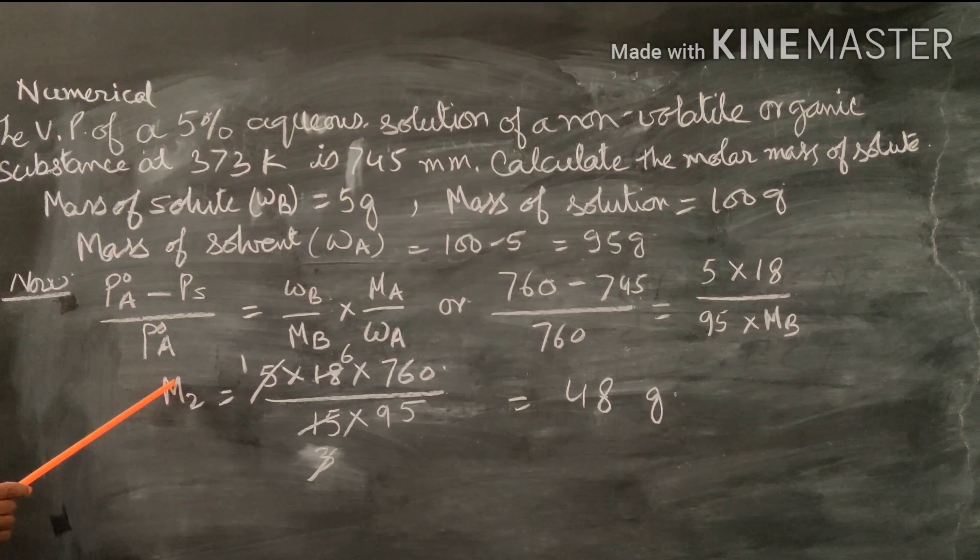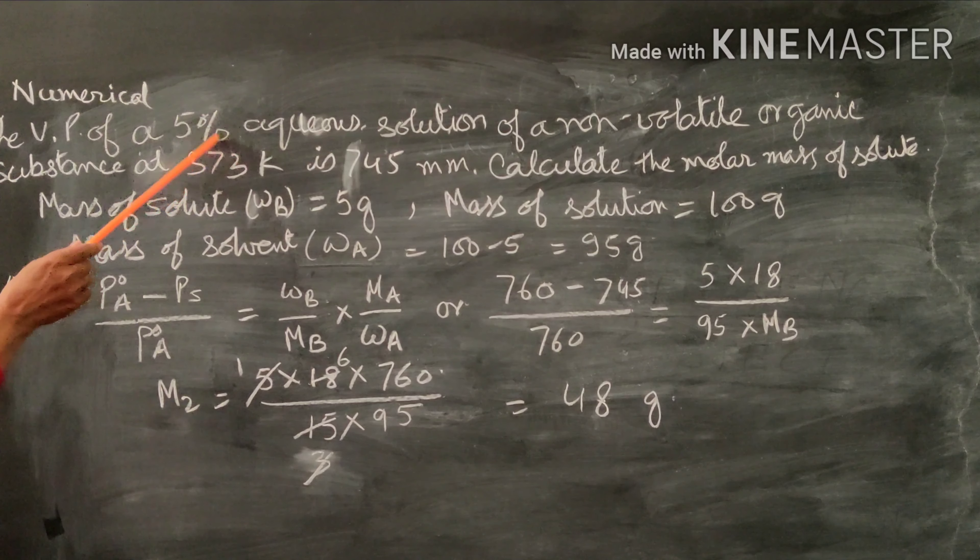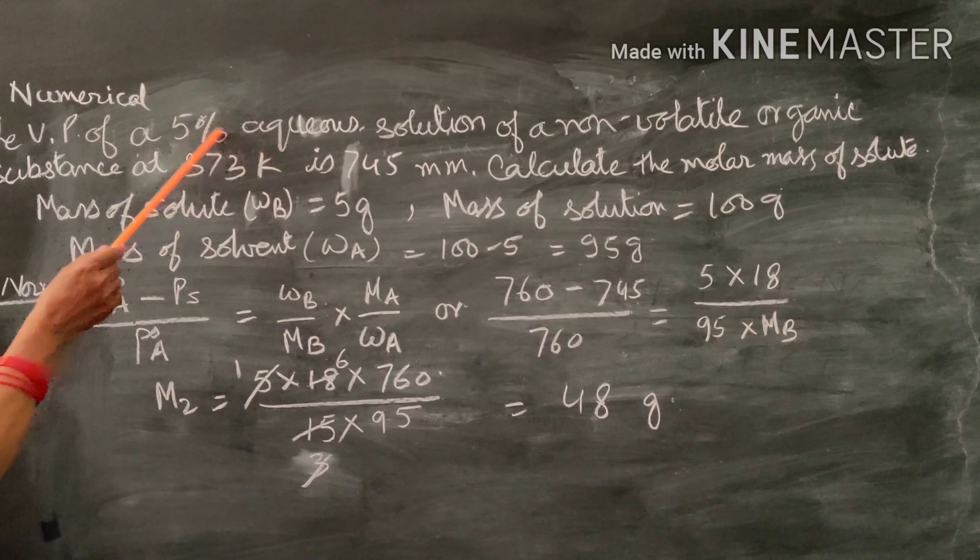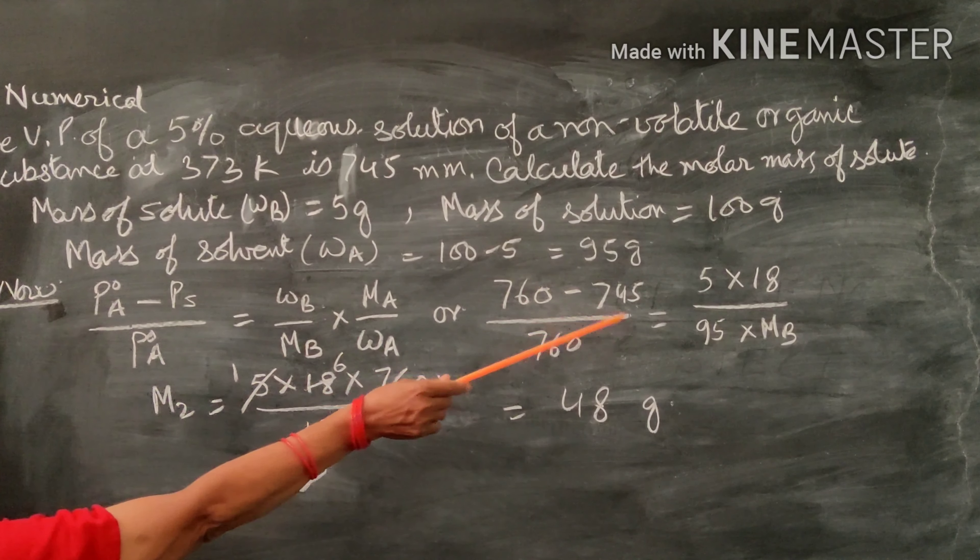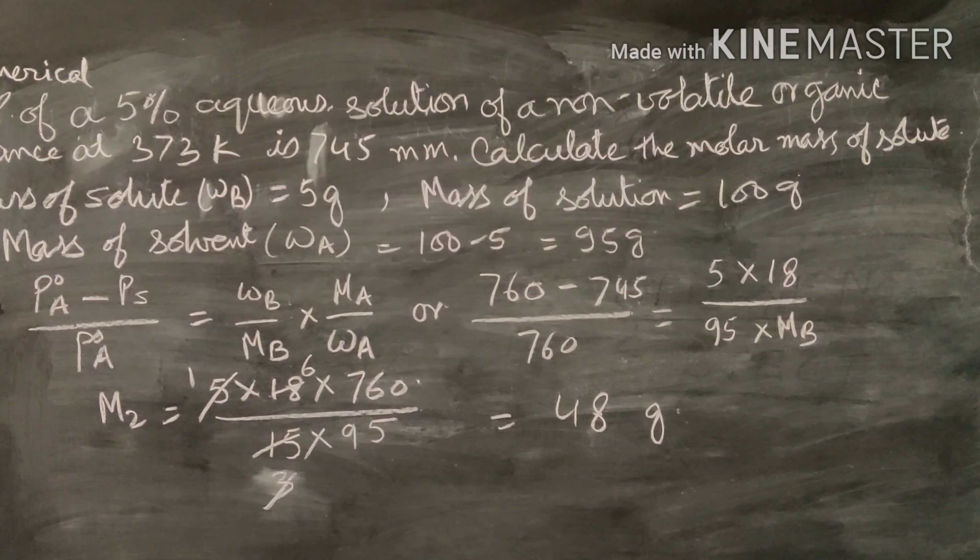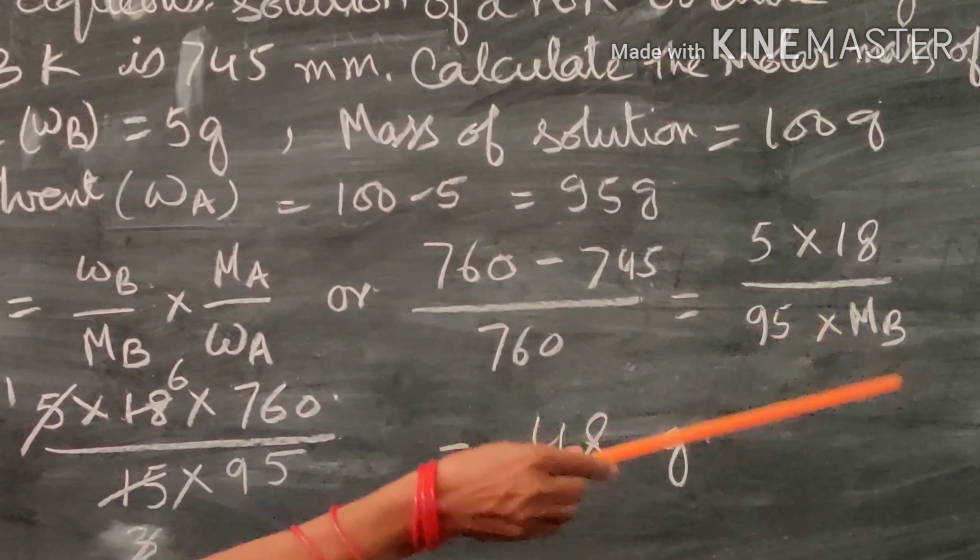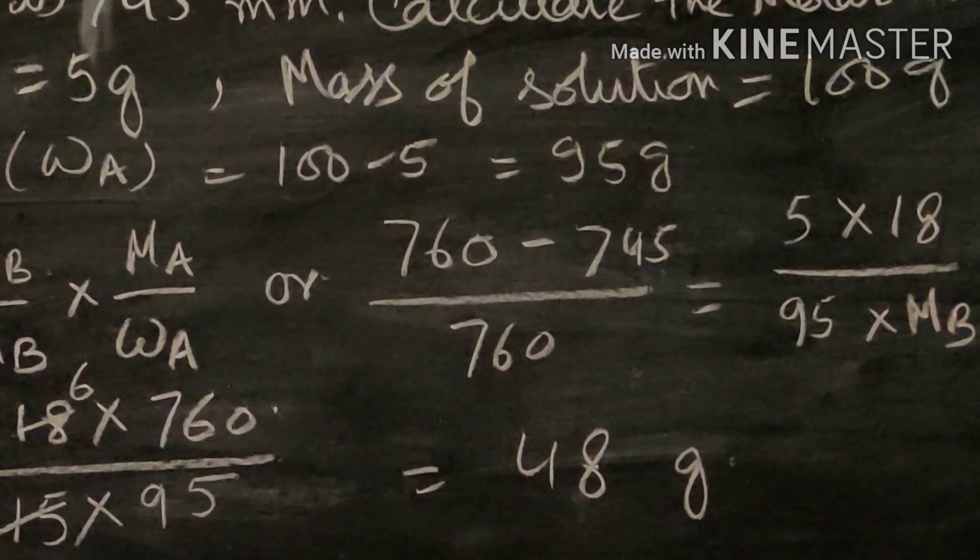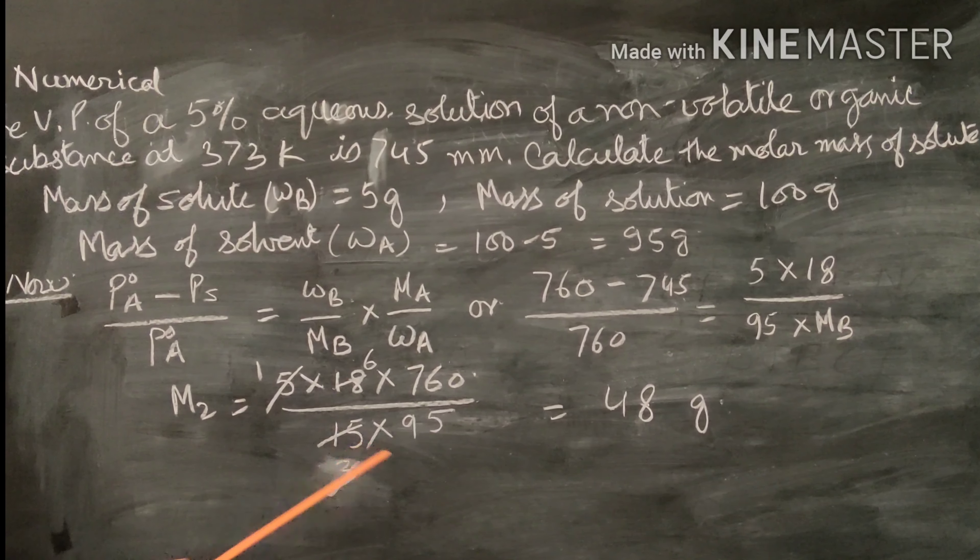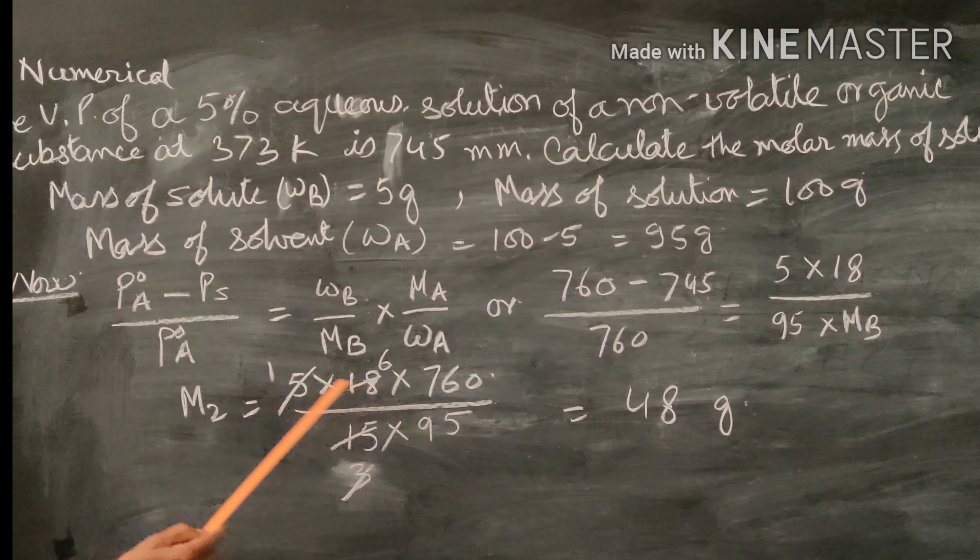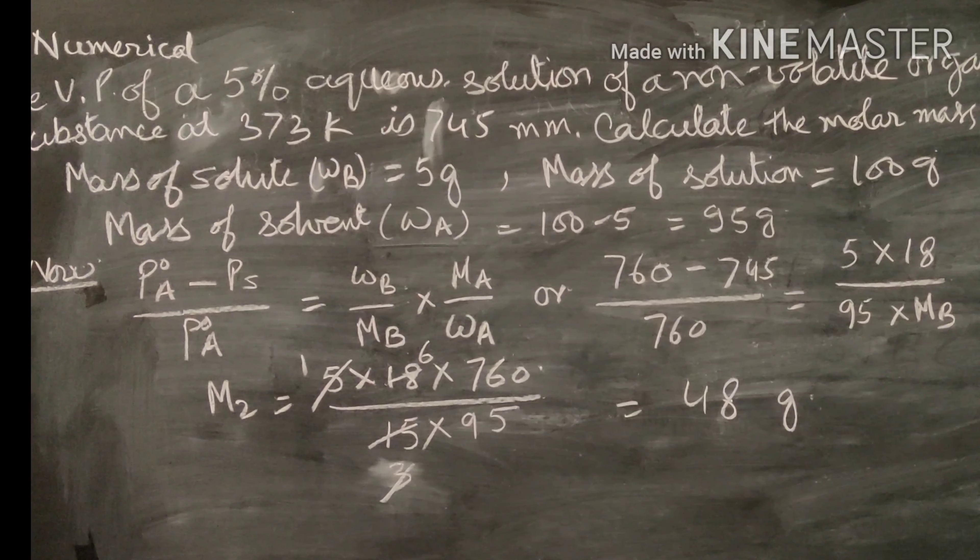According to this formula, substitute the values: P0 equals 760, then 760 minus 745 over 760. When you transpose and substitute, you get 5 times 18 times 760 divided by 15 times 95. After simplification, you get 48 grams. That is the answer.